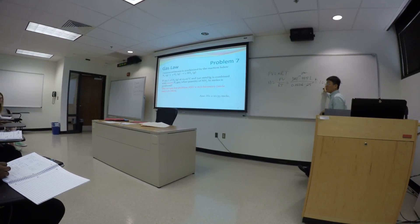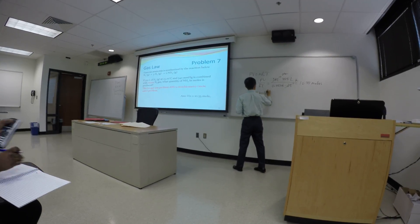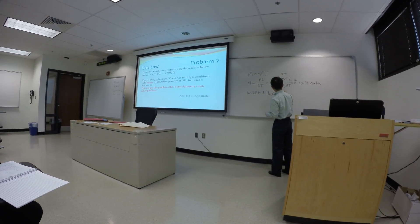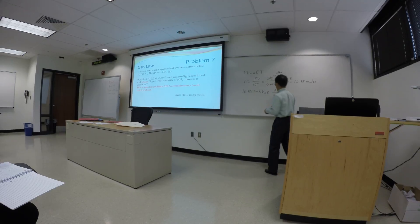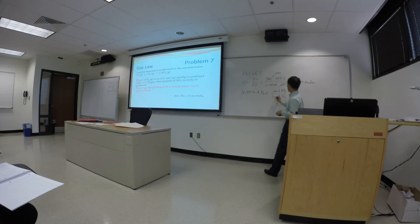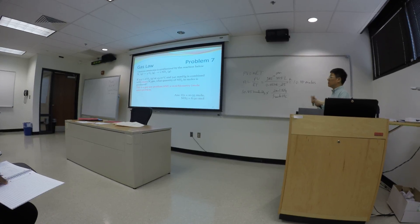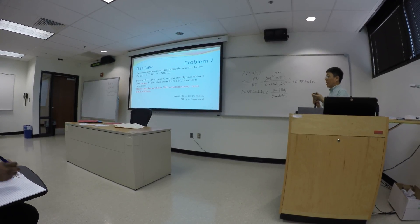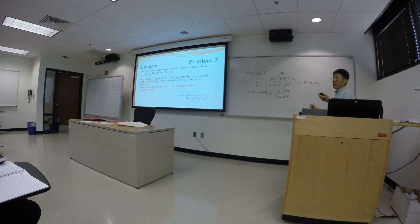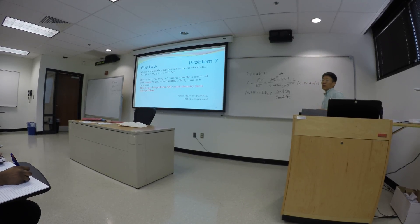We have 10.35 moles of hydrogen gas. Every two moles of ammonia requires three moles of hydrogen gas — this is the conversion factor in the balanced chemical reaction equation. Moles of hydrogen gas will cancel out, giving you the moles of ammonia. This is a question where we combine the gas law equation and stoichiometry together: you convert the volume into moles, then figure out how many moles of product you're supposed to get.